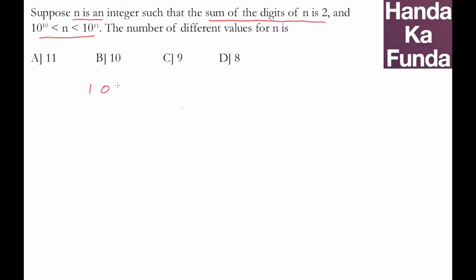10 to the power 10 is 1 followed by 10 zeros. So I have 3 zeros, 4 zeros, 5 zeros, 6, 7, 8, 9, 10. So this is 10 to the power 10.